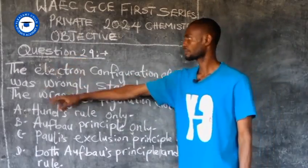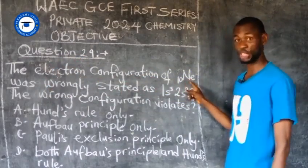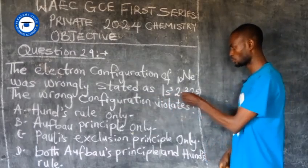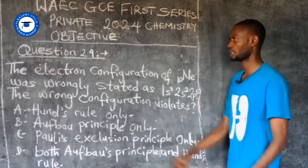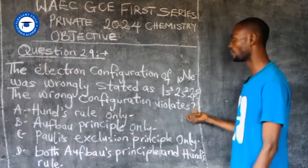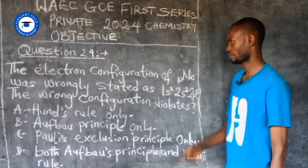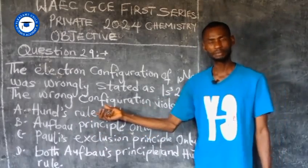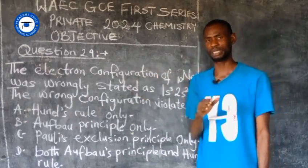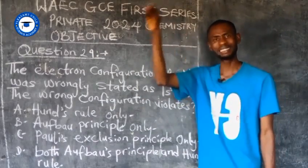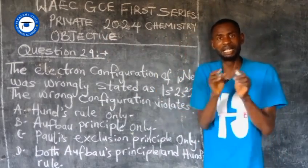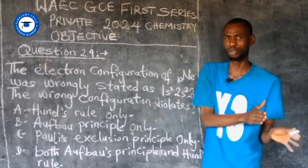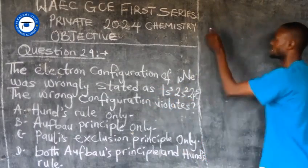Question number 29: The electronic configuration of neon was wrongly stated as 1s³, 2s², 2p⁵. Which principle does this violate? Option A: Hund's rule only — Hund's rule states that electrons occupy degenerate orbitals singly before pairing. Degenerate orbitals include P (3 sub-orbitals), D (5 sub-orbitals), and F (7 sub-orbitals).